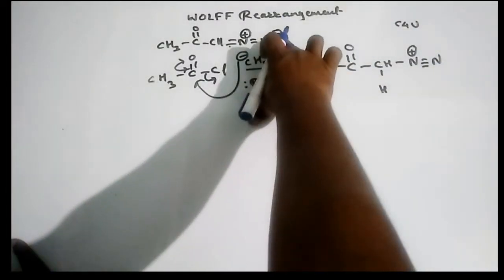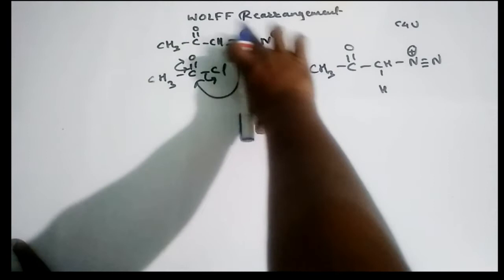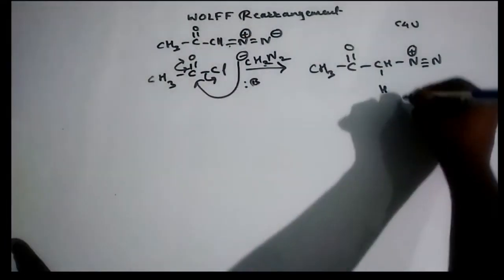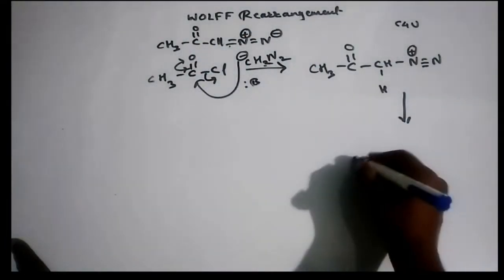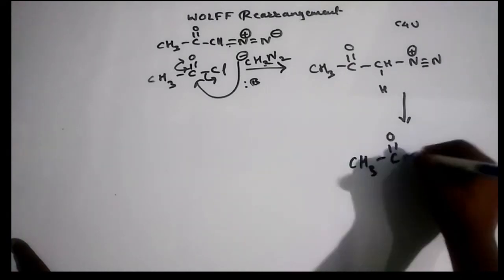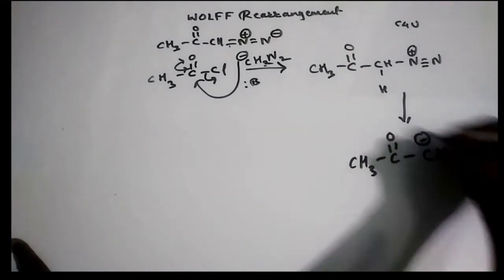So this is your CH and triple bond N plus. So this is one way to write the structure of diazo ketone. Or in another way, the reaction can be written in this form also.